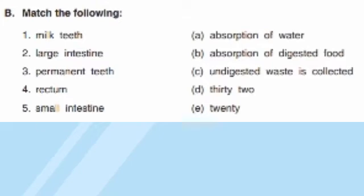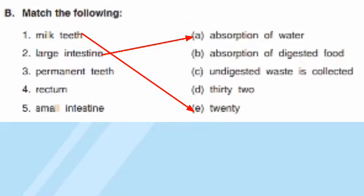Now the match-the-column answers. Milk teeth number — that is 20. Large intestine — absorption of water occurs there. Permanent teeth — that is 32.